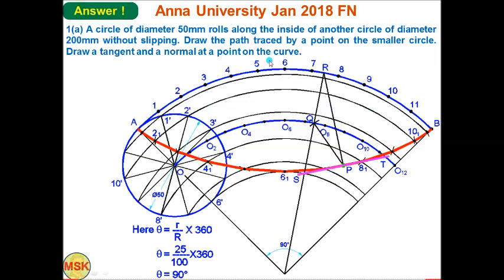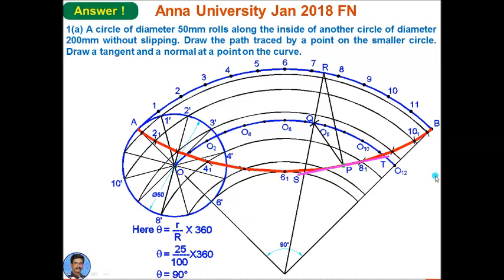From point A, mark O which is 25 mm — the radius of the smaller circle. With O as center, draw a circle of radius 25 mm. Since arc AB is divided into 12 parts, divide this circle also into 12 parts and name them 1', 2', 3', 4', and so on. With the center point, draw arcs passing through points 1', 2', 3', and the center of the smaller circle O, through 4', 5', 6', and so on. Divide that arc into 12 parts and name them O1, O2, O3, O4, and so on.